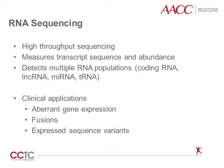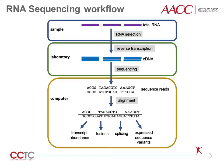RNA-Seq has several clinical applications, including detection of disease-relevant aberrant gene expression, gene fusions, and expressed sequence variants. An RNA-Seq workflow starts by selecting for the RNA of interest from total RNA in the cell. The selected RNA is subjected to reverse transcription to produce complementary DNA, or cDNA, which is then sequenced. One of the most common sequencing platforms in the clinical setting is Illumina sequencing. The resulting sequence reads are aligned to a genome assembly.